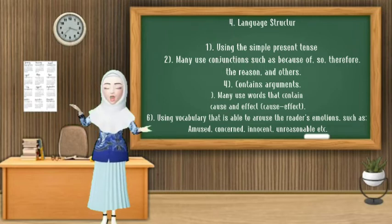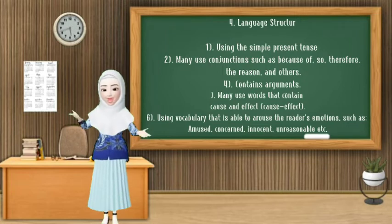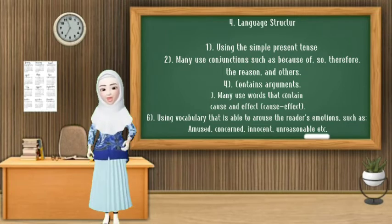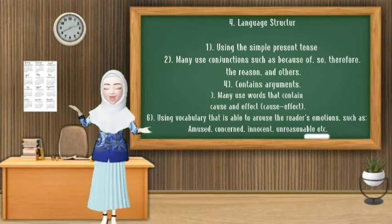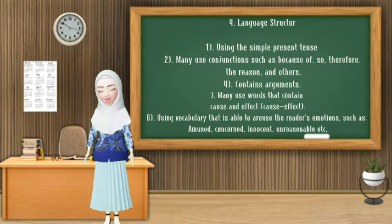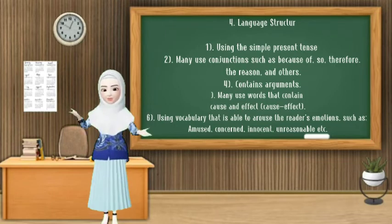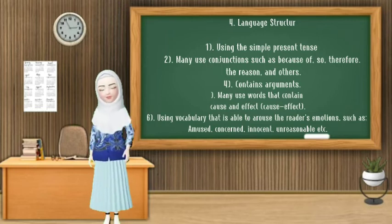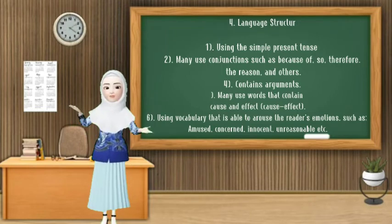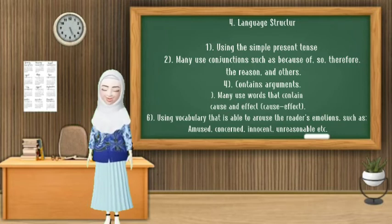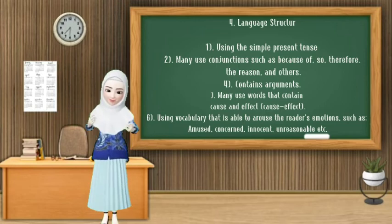For the next explanation is about the language structure of exposition text. The first is using the simple present tense. The second, many use conjunctions such as 'because of', 'so', 'therefore', 'the reason', and others. The next is continuous arguments. The next is using words that contain cause and effect. For the last is using vocabulary that is able to evoke the reader's emotions, such as 'amused', 'concerned', 'innocent', 'unreasonable', and so on.